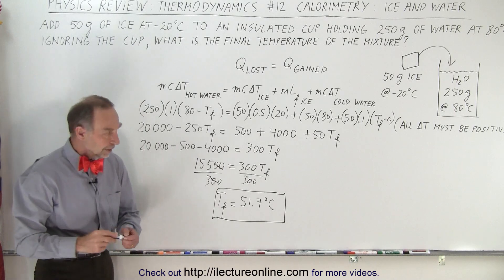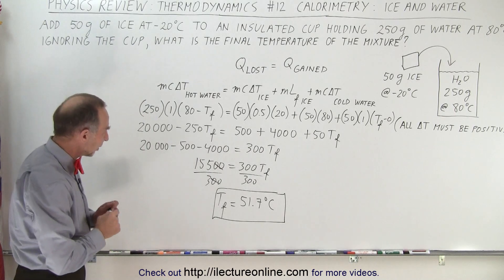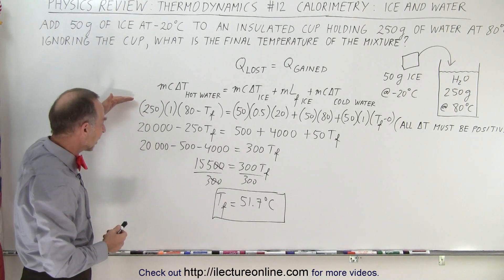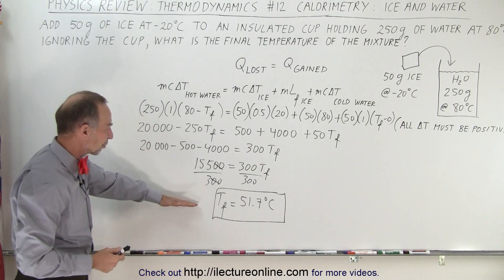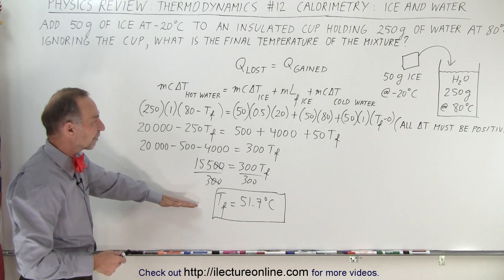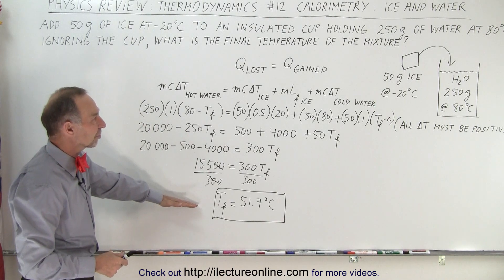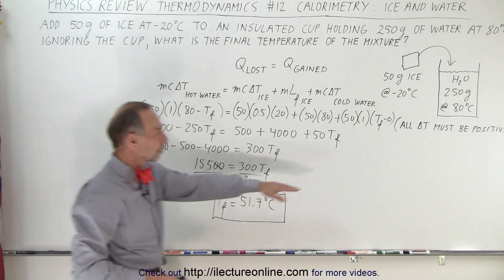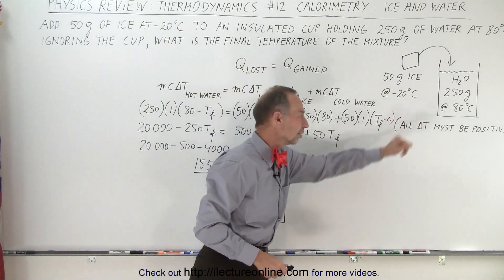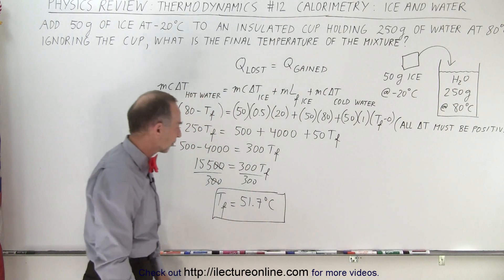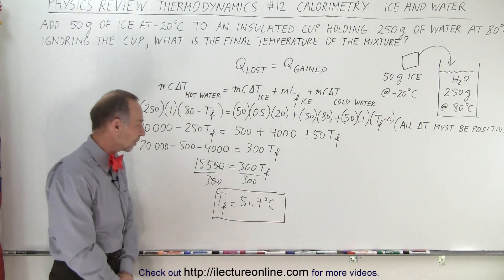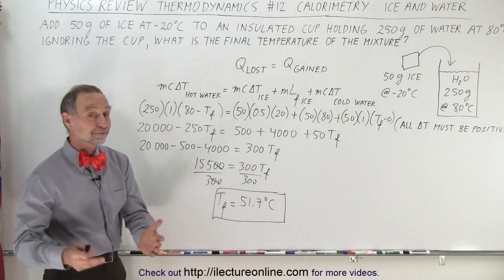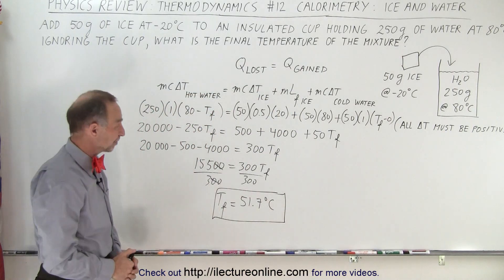And there we go. With a little bit of algebra, we find that our final temperature is 51.7 degrees Celsius. So we dropped almost 30 degrees from the original 80 degrees Celsius down to about 51.7, and that is how it's done.